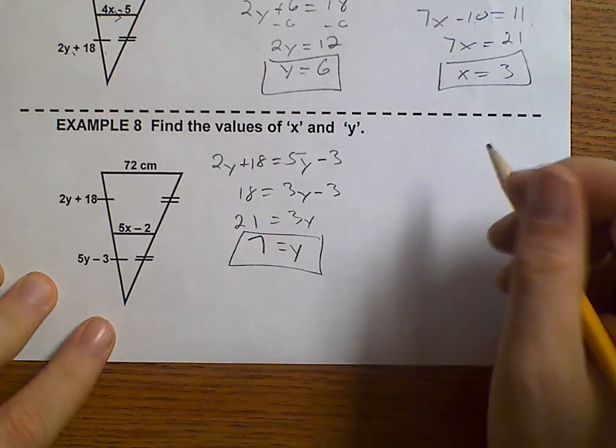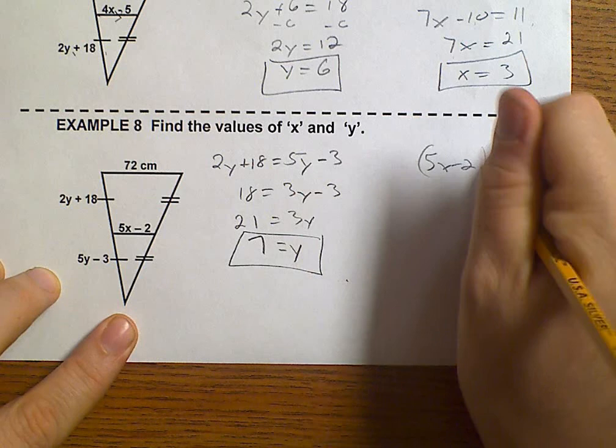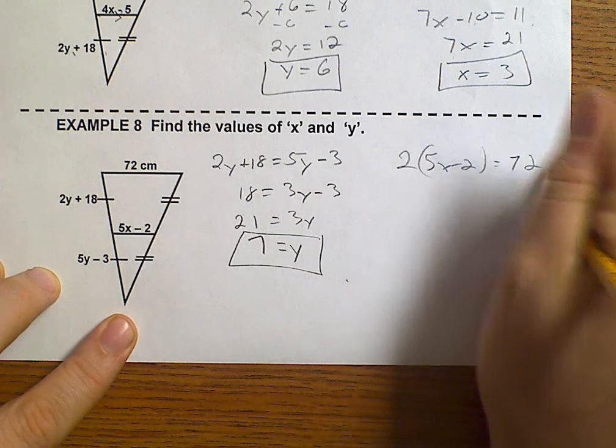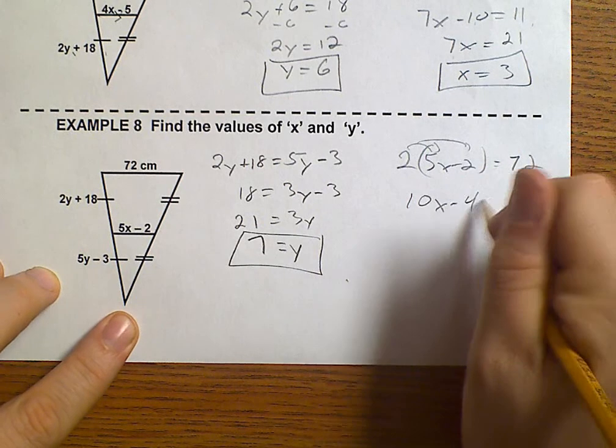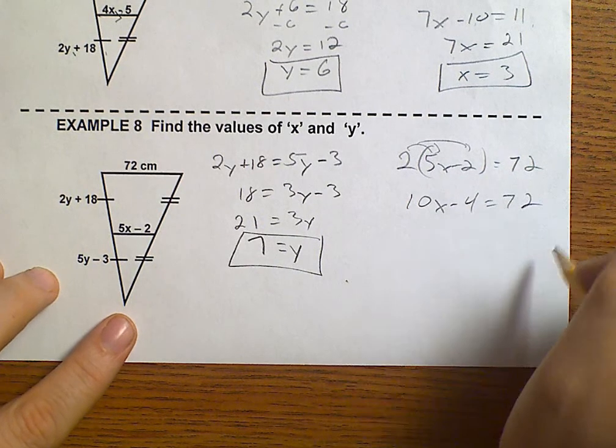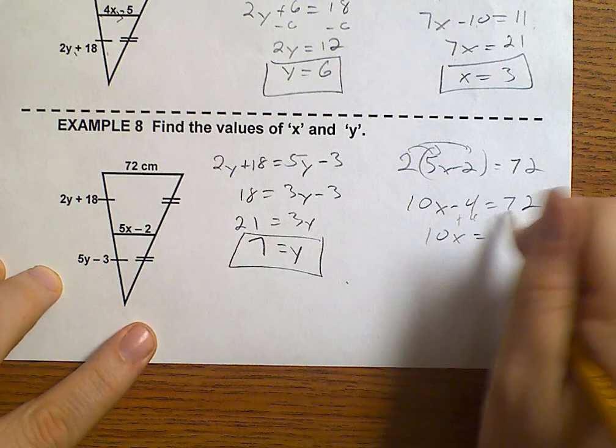And for over here, 5X minus 2 times 2 must equal 72. Distribute: 10X minus 4 is 72. 10X equals, we add 4, 76.